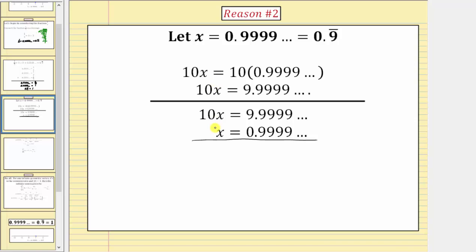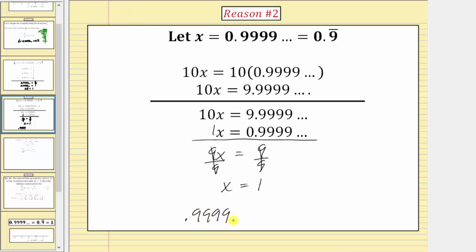10x minus x, or 10x minus 1x, equals 9x. On the right side, 9.9 repeating minus 0.9 repeating equals 9. So we have 9x equals 9. Dividing both sides by 9, this simplifies to x equals 1. Since we started with x equals 0.9 repeating, this once again shows 0.9 repeating equals 1.